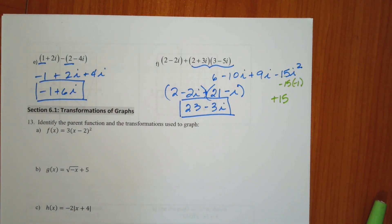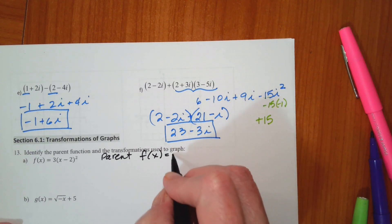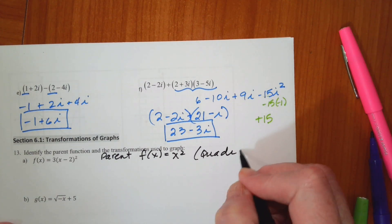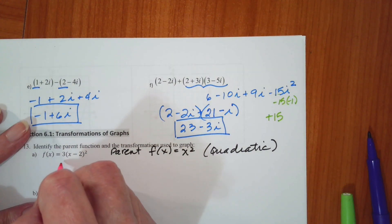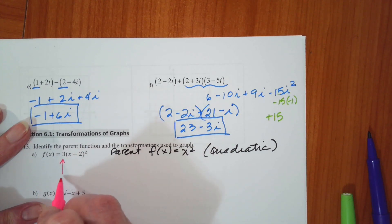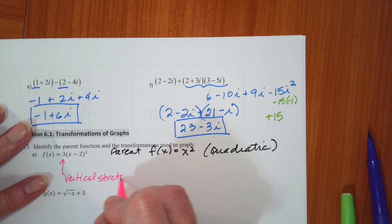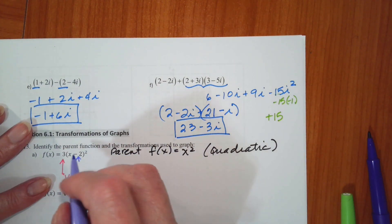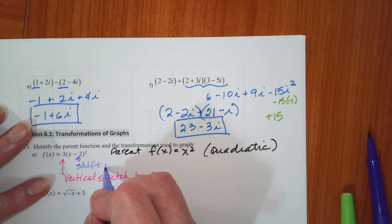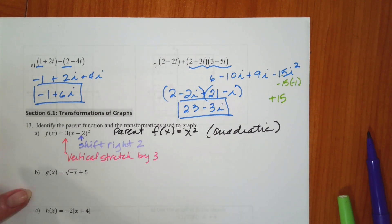Identify the parent function and transform the graph. The parent function is f of x equals x squared, which is the quadratic. Let's go through the transformations: the 3 is a vertical stretch by 3, and inside, this is going to shift it to the right 2.